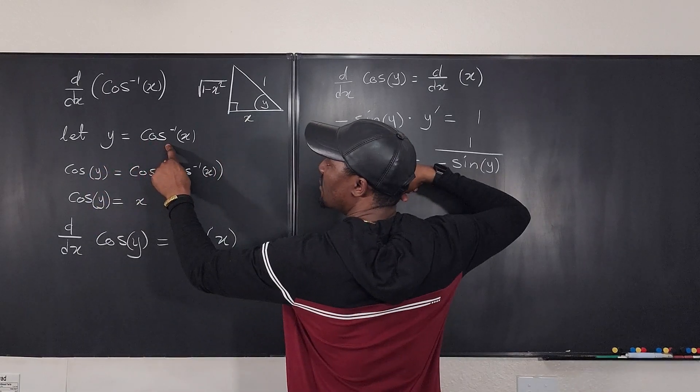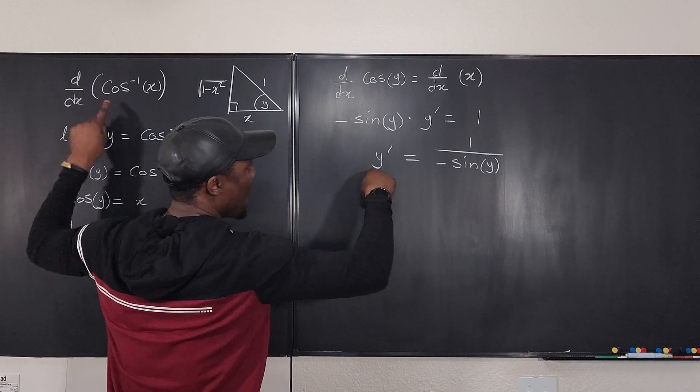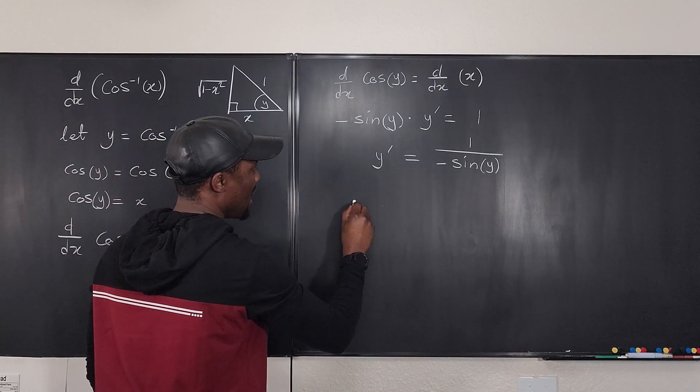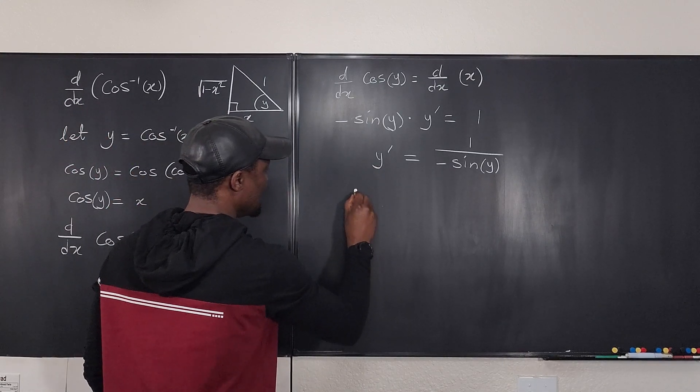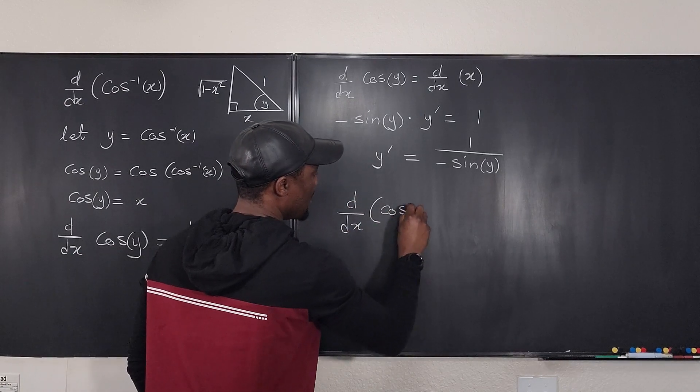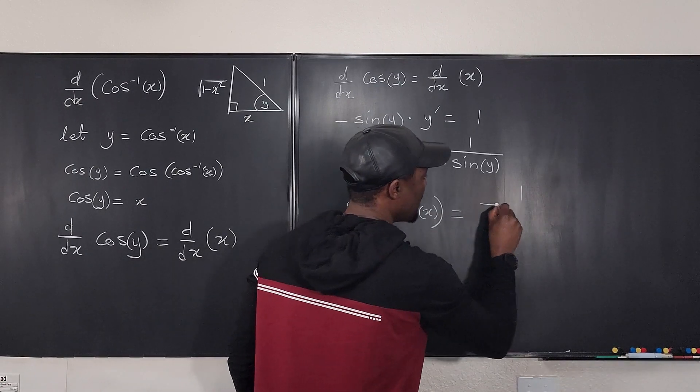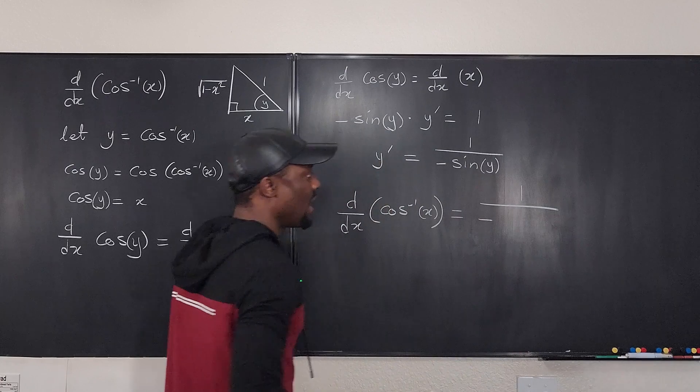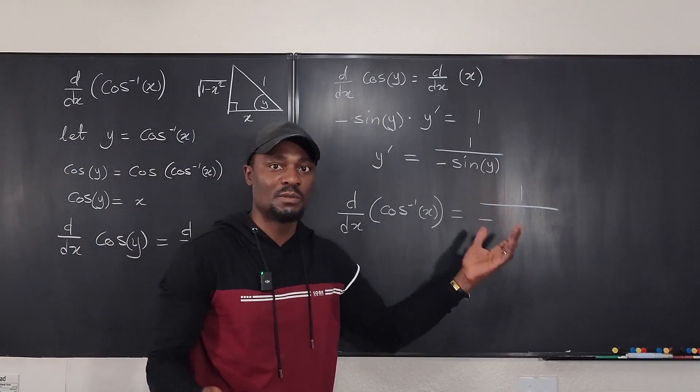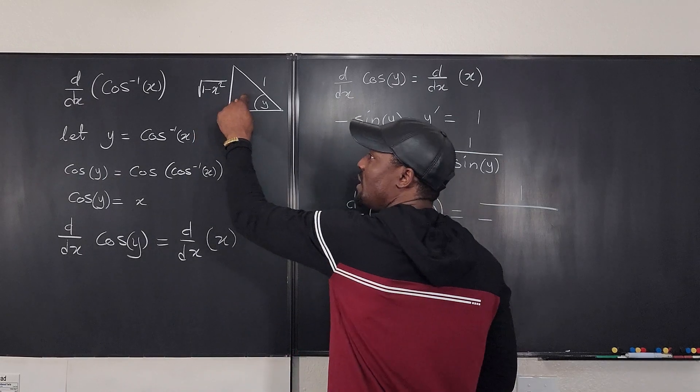So what's y prime? We said y is this. So y prime must be this derivative. And it means that our answer y prime, which is the derivative d/dx of arc cosine of x will be equal to one over negative. Now what is sine y? We can't write y as part of our answer. Everything has to be in terms of x. You go here. What is sine y?